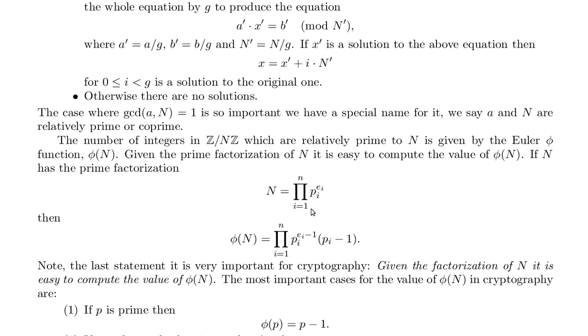This big capital pi symbol means product or multiply. You multiply over the indices from 1 to n. So p to the e i will look like a prime to some number times another prime to some number times another prime to some number. So this is a prime factorization, just written in a compact notation.